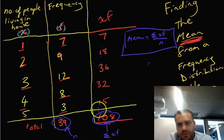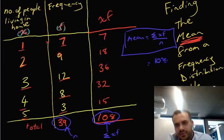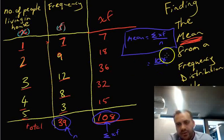So the sum of all of the XFs is this number, 108. And we're going to divide it by this number, 39.